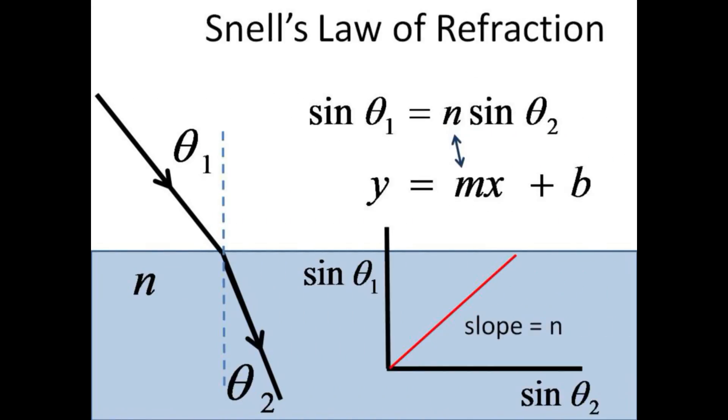Trace emergent rays for each of the incident angles and measure the incident and refracted angles relative to the vertical axis. Since the light is incident from air into water, n1 is very nearly 1 and n2 is the index of refraction of water. By Snell's law, the sine of theta1 is linearly related to the sine of theta2, with the slope of the straight line being n, the index of refraction of water.